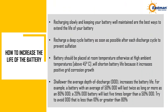How to increase the life of the battery? Recharging slowly and keeping your battery well maintained are the best ways to extend battery life. Recharge a deep cycle battery as soon as possible after each discharge cycle to prevent sulfation. Battery should be kept at room temperature; high ambient temperatures above 45°C will shorten battery life because they increase positive grid corrosion growth. Shallow average depth of discharge (DOD) increases battery life. For example, a battery with an average of 50% DOD will last twice as long as one at 80% DOD, and a 20% DOD battery will last 5 times longer than a 50% DOD battery.